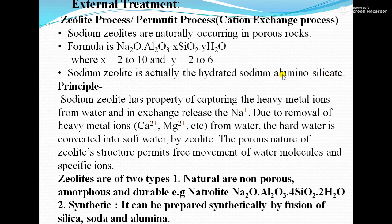Zeolite can exchange only cations present in the water. The formula of zeolite is Na₂O·Al₂O₃·XSiO₂·YH₂O, where X is from 2 to 10 and Y is from 2 to 6. Zeolites can be obtained naturally in porous rocks.